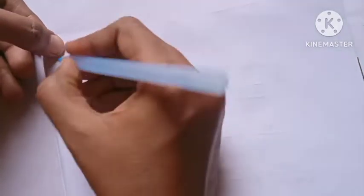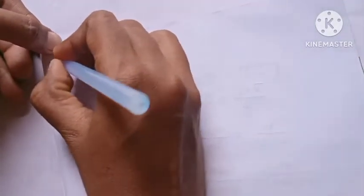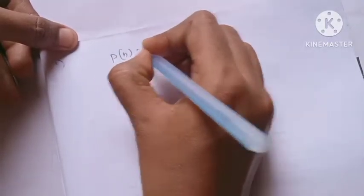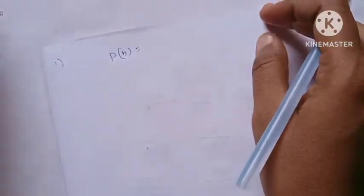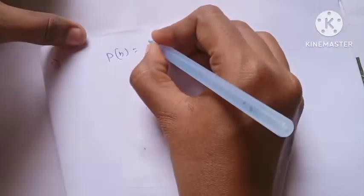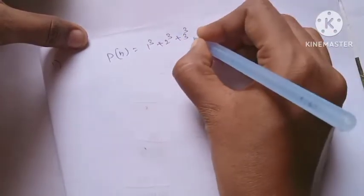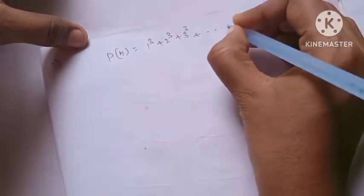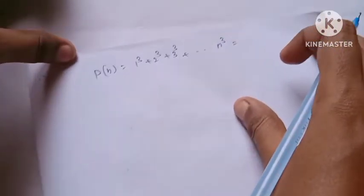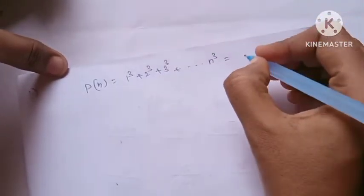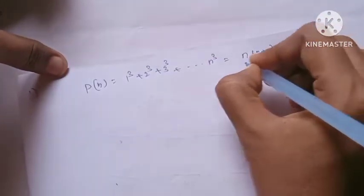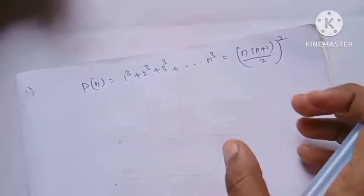The condition is 1 cube plus 2 cube plus 3 cube, up to n cube, is equal to n into (n plus 1) by 2, the whole square. We already know this result.